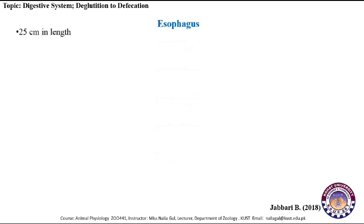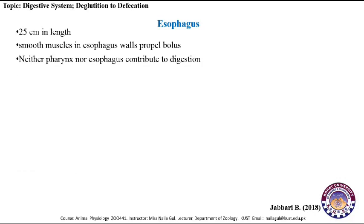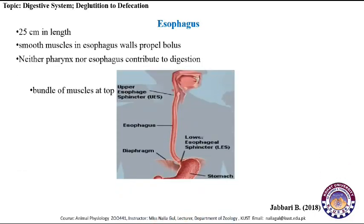The esophagus is a muscular tube which is 25 cm in length. When swallowing begins, smooth muscles in the esophagus contract and propel the bolus to the stomach. Neither the pharynx nor the esophagus contribute to digestion. At the upper end, the esophagus has the upper esophageal sphincter — a bundle of muscles that normally maintains constriction but relaxes when required to allow food to enter the esophagus.